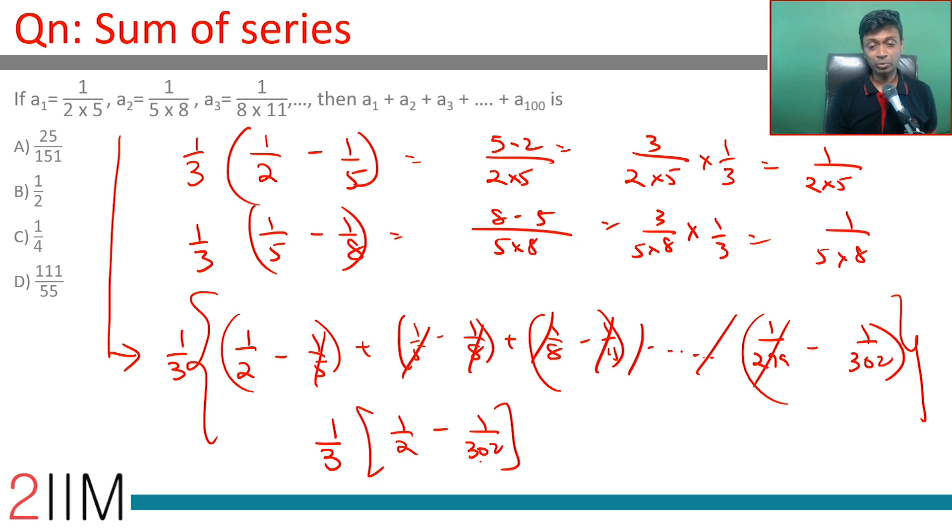302 and 2, LCM will be 302, this will be 151. So this is 1 by 3 times 151 minus 1 by 302. This is 50 by 302 or 25 by 151.